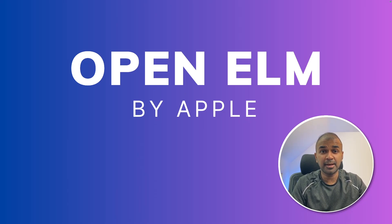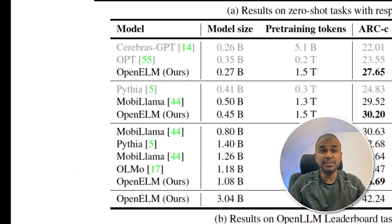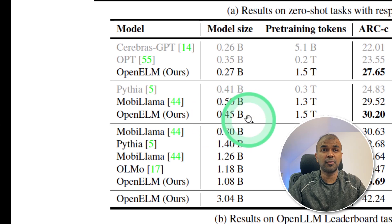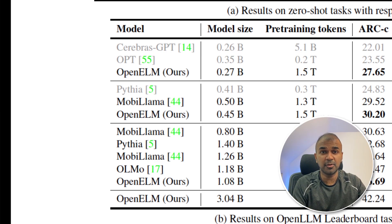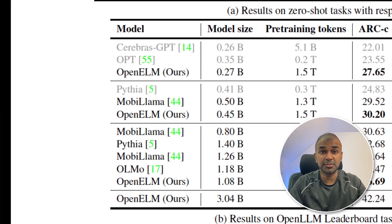We now have Open ELM, an open source large language model released by Apple. They have released this model in four different sizes: 0.2 billion, 0.4 billion, 1 billion, and 3 billion parameter models. These can be considered small language models capable of running on mobile phones. Recently there are many small language models being released focusing on mobile phones, so soon our mobile phones will be powered by these language models.